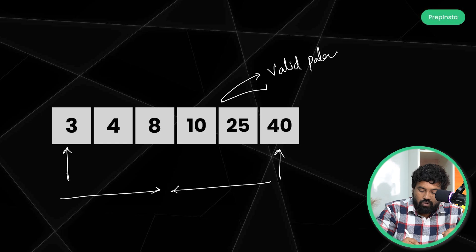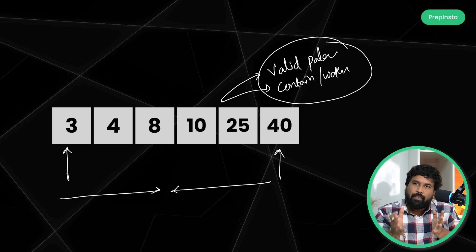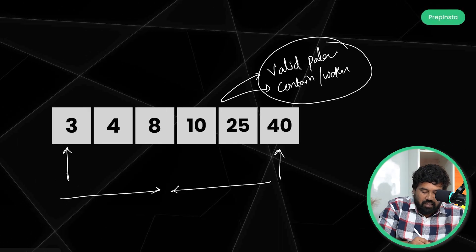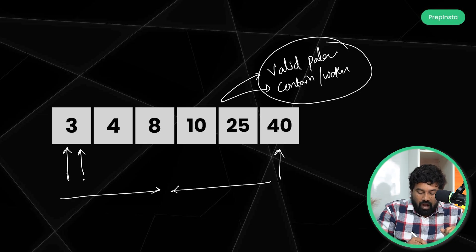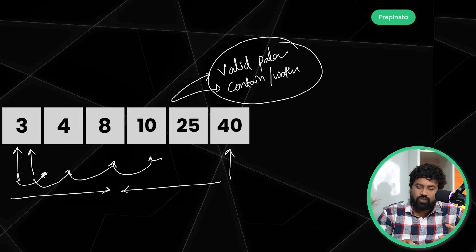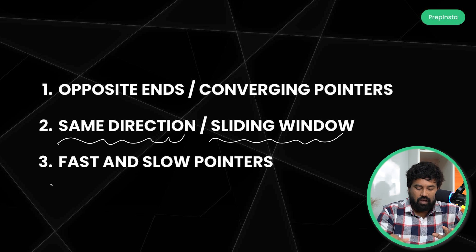The first type is opposite ends, or converging pointers. The two pointers start from opposite ends and converge towards each other. We use this technique for valid palindrome problems and also for LeetCode's 'Container With Most Water.' Whenever a comparison from start to end is required, we use this technique. The second type is same-direction pointers, where both pointers start from the same position — one searches for new elements and the other fetches any order. This is mostly used for subarray-related problems and is also called the sliding window technique.